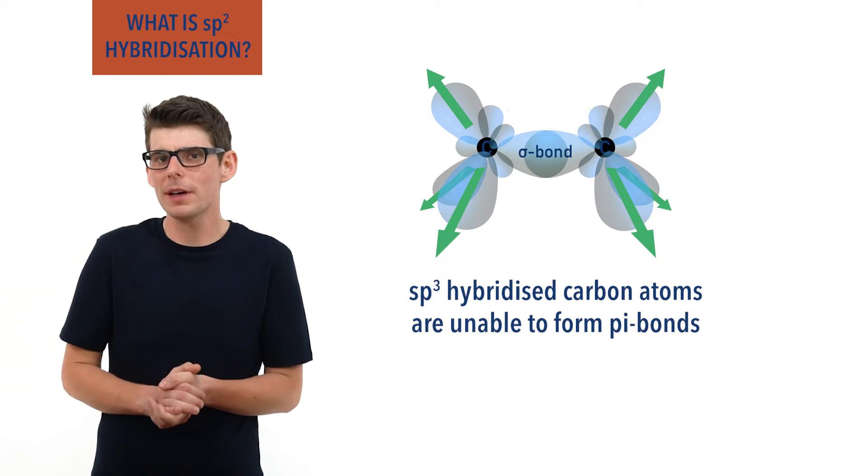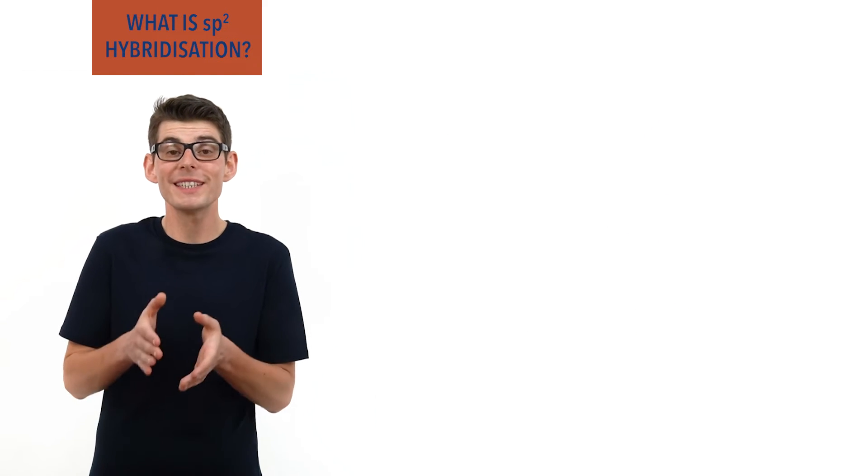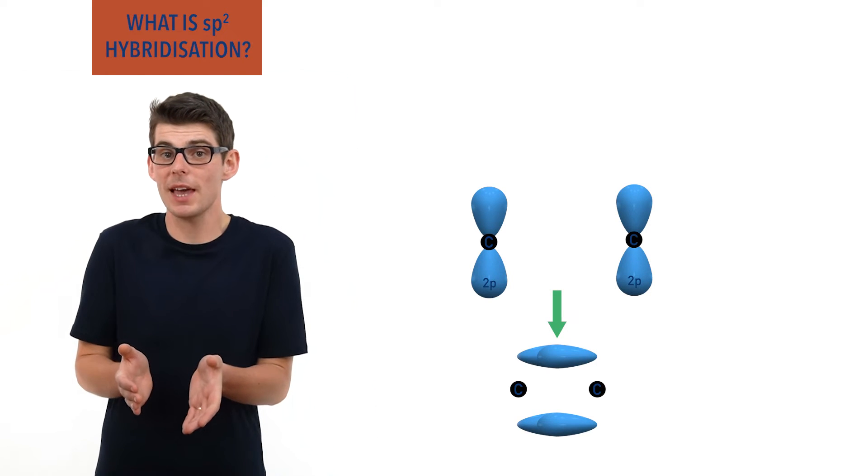In order to form a pi bond then, each carbon atom has to have a half-filled p orbital that isn't hybridized. For this to be the case,